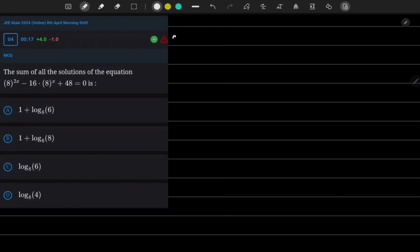Now let me solve this question. First of all, let me write the equation: 8^x whole squared minus 16·8^x plus 48 = 0.